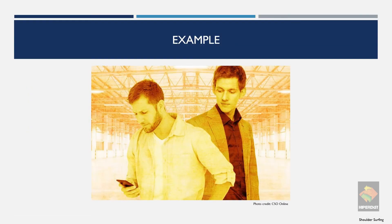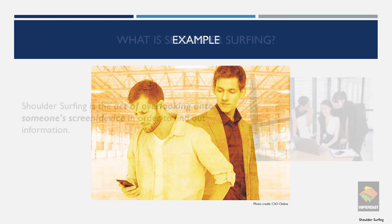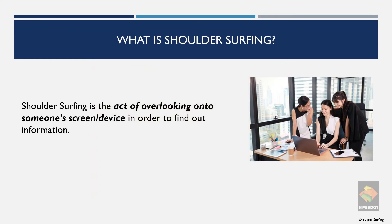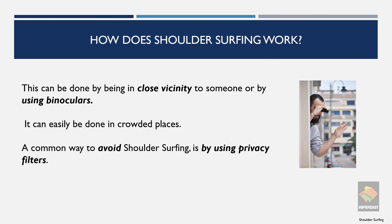This picture is pretty much self-explanatory. However, let's go into the details of what shoulder surfing is. Shoulder surfing is the act or method of overlooking onto somebody's screen in order to find out what is on their device. The attacker positions himself in such a way to see information on an individual's screen. If the attacker is far away, he can even use binoculars. The most common way to avoid this is by using privacy filters on all your devices.